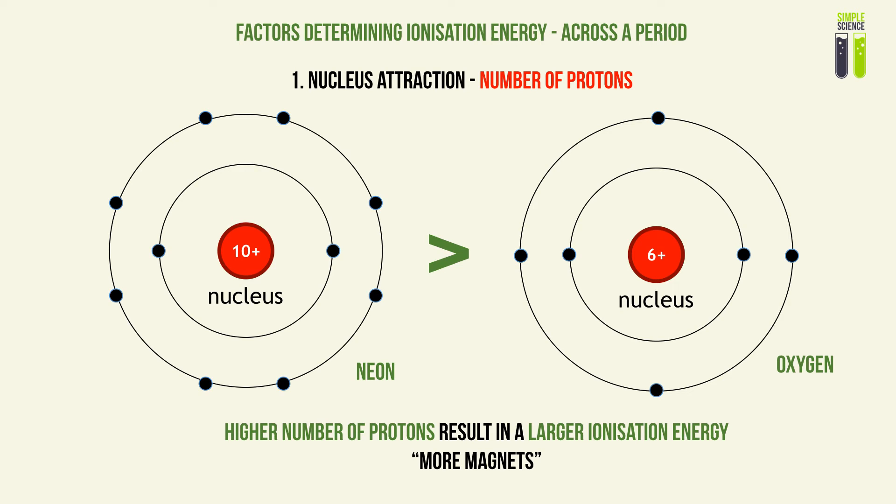When you look at the neon atom, there are 10 protons in the nucleus, and in the oxygen atom there are 6 protons. Similarly, neon has 10 electrons and oxygen has 6 electrons. Since neon has more protons and electrons, there is greater attraction onto the outermost electron — think of it as more magnets, more attraction sources inside the neon atom compared to oxygen. This explains why more energy is required to overcome this attraction, so the greater the number of protons, the larger the ionization energy.